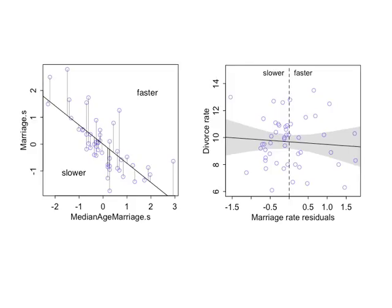The residual plot shows there's not really much effect for marriage rate once median age of marriage is accounted for. The slope of the black line in the right-hand graph is the slope we got from the multiple regression — it's the same slope. This is invisibly how the multiple regression works internally. If instead the residuals were to show the opposite, the slope would be steeper and more reliable.